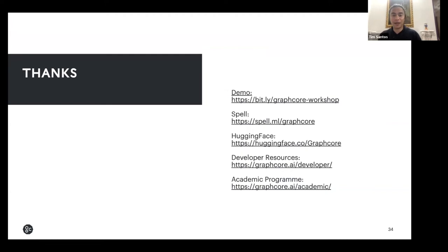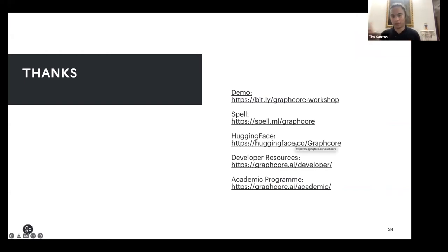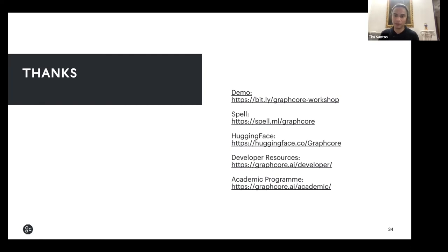That's my quick talk. Next week I'll have a hands-on walkthrough of a specific use case running on an IPU — how a model would look like, how fine-grained parallelism, model parallelism, data parallelism, and pipelining are implemented in the hardware. Go to graphcore.ai/workshop for a sneak peek. You can also sign up to Spell, go for a trial, set up your account, and have free trial access. Hugging Face models are also available — visit the developer resources and academic program resource links.